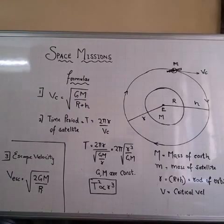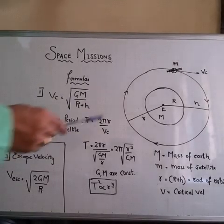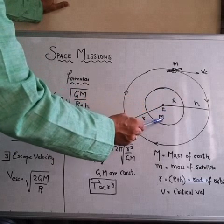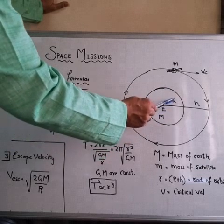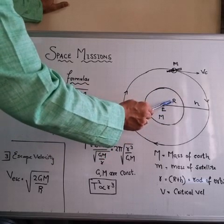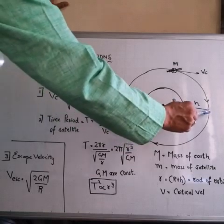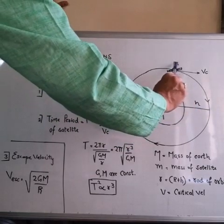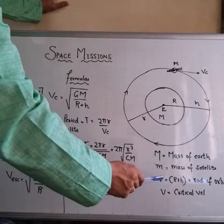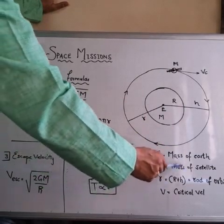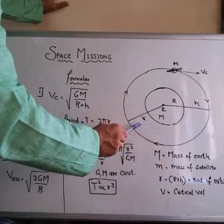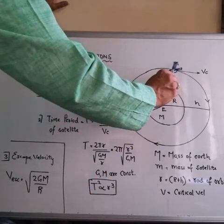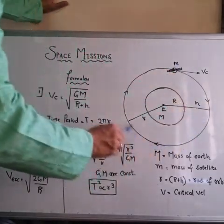Now, the three formulas you have to understand. First, this is the Earth. Capital M stands for mass of Earth, capital R stands for radius of the Earth, H is the height of the satellite above the surface, small m is the mass of the satellite, small r stands for radius of orbit, and Vc stands for critical velocity.